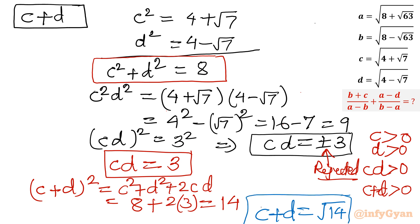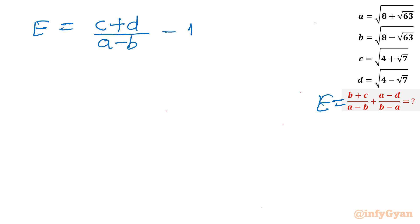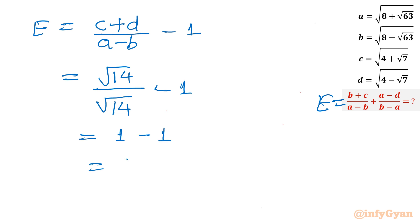Now let us write our expression. We had simplified it to (c+d)/(a−b) − 1. Substituting our values: c+d = √14 and a−b = √14, so we get √14/√14 − 1 = 1 − 1 = 0. So our simplified answer for the given expression is 0.